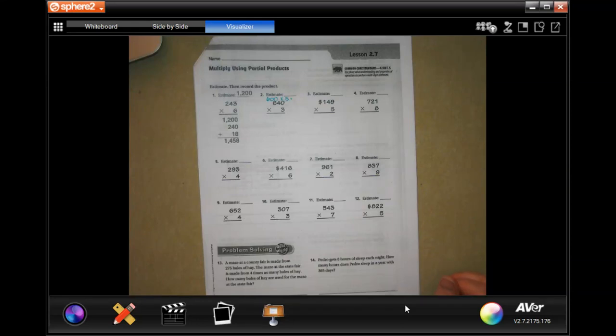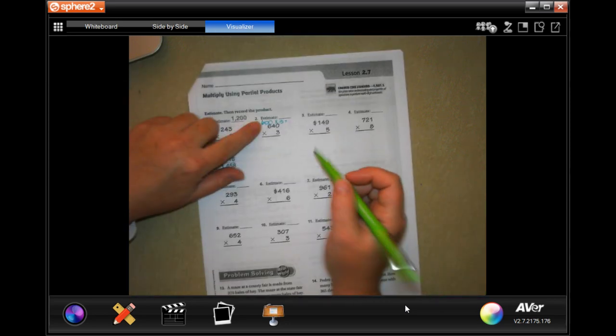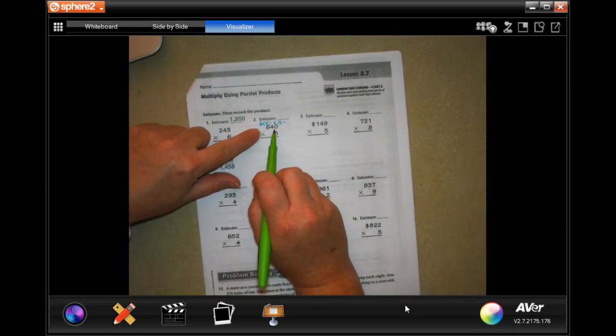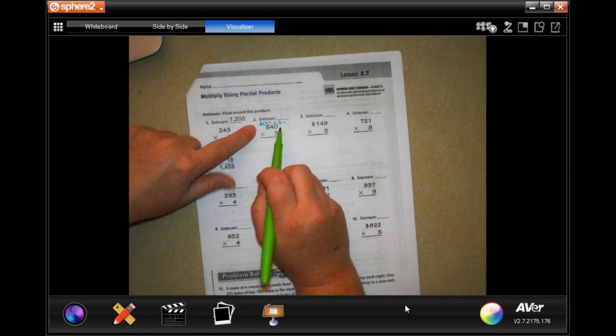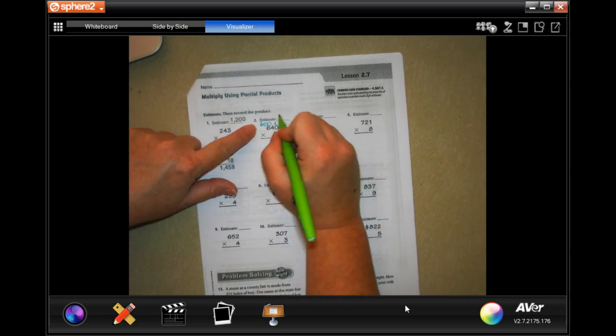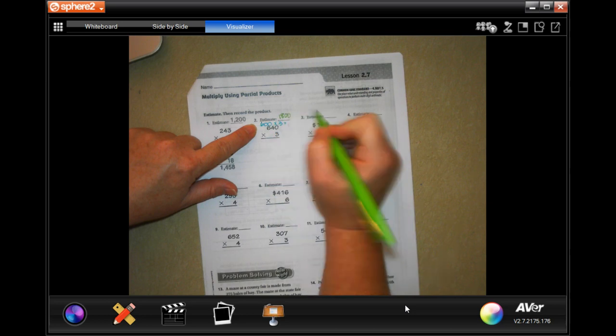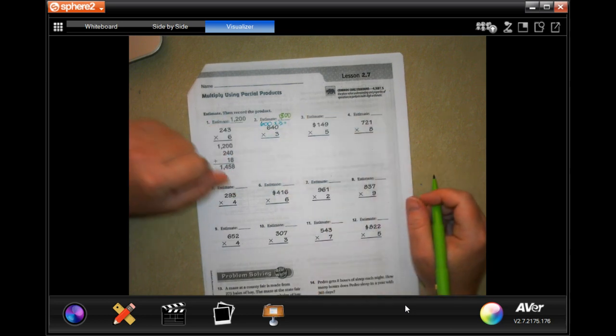Hi guys, welcome to fourth grade chapter 2 lesson 7. It says multiplying using partial products. So at first it wants us to give an estimate. So 640 is about 600 and then we're just going to use times 3. So then 3 times 6 is 18 and add on those two zeros. That's your estimate.